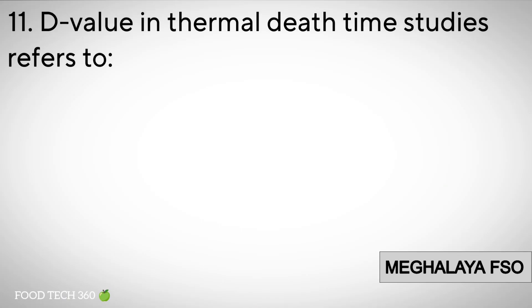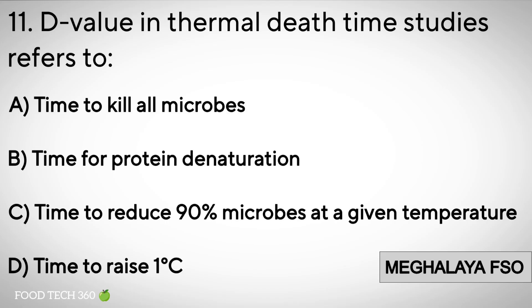Question number 11: D-value in thermal death time studies refers to — Options: A. Time to kill all microbes. B. Time for protein denaturation. C. Time to reduce 90% of microbes at a given temperature. D. Time to raise temperature by 1 degree Celsius.